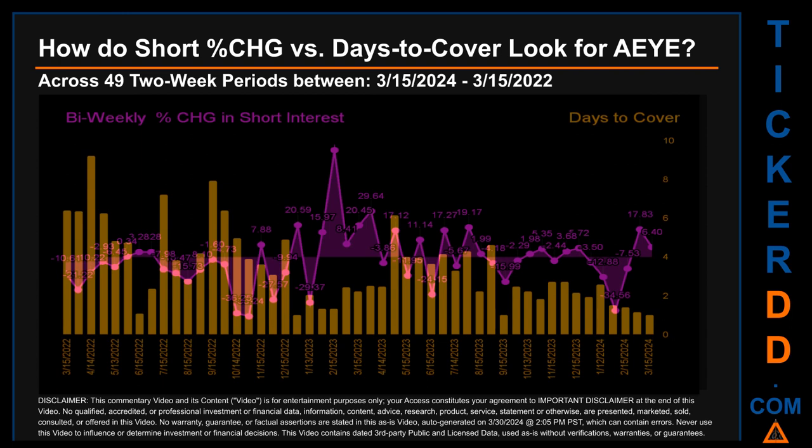The average days to cover was about 3.48. The biggest days to cover was 9.22, and it happened once on the April 14, 2022 settlement date.